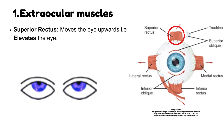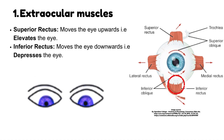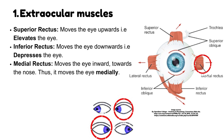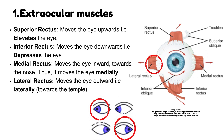Superior rectus moves the eye upwards — that is, it elevates the eye. Inferior rectus moves the eye downwards — that is, it depresses the eye. Medial rectus moves the eye inward towards the nose, thus moving the eye medially. Lateral rectus moves the eye outward — that is, laterally, towards the temple.